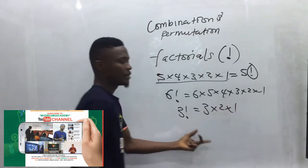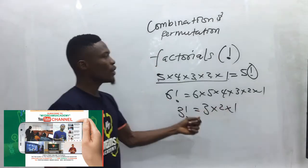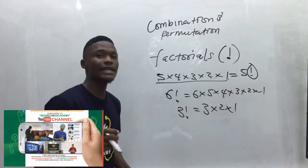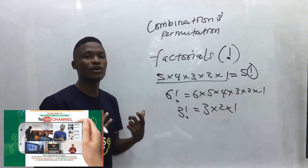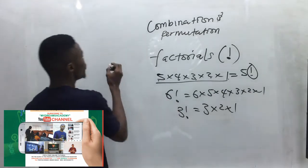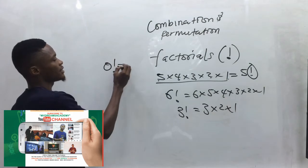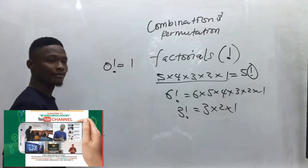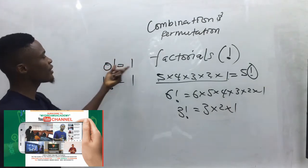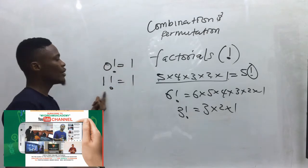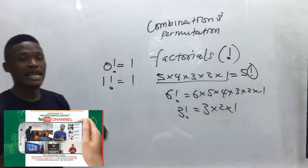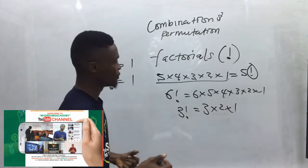Now that we understand factorials, take note of two special cases: zero factorial equals one, and one factorial also equals one. There are proofs for these but that is not covered in this video.